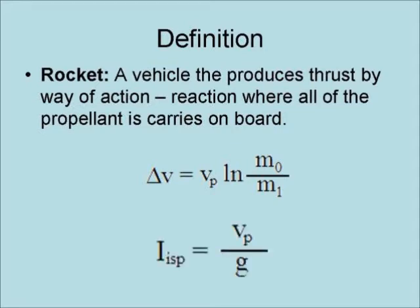Furthermore, the efficiency of a rocket is measured in terms of specific impulse, which is the amount of time in seconds that one pound of propellant can produce one pound of thrust. It is calculated by dividing the velocity of the propellant by the acceleration due to Earth's gravity at the surface.